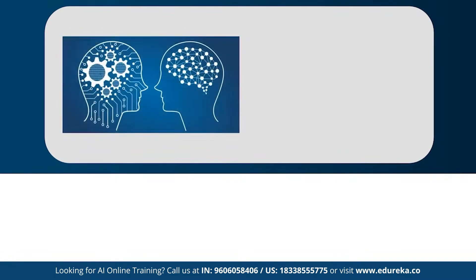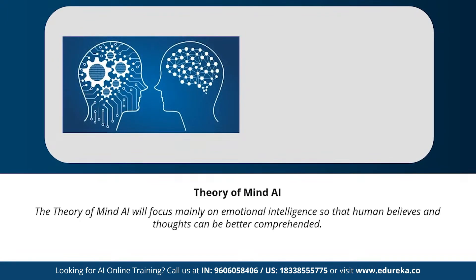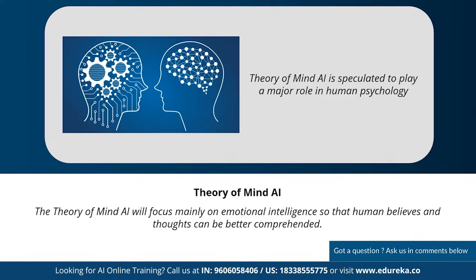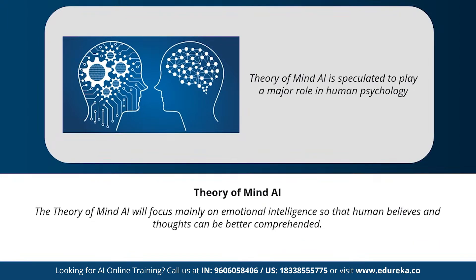Next we have theory of mind artificial intelligence. This is a more advanced type of AI speculated to play a very important role in psychology. It will mainly focus on emotional intelligence so that human beliefs and thoughts can be better comprehended. Theory of mind AI has not been fully developed yet, but rigorous research is happening in this area.